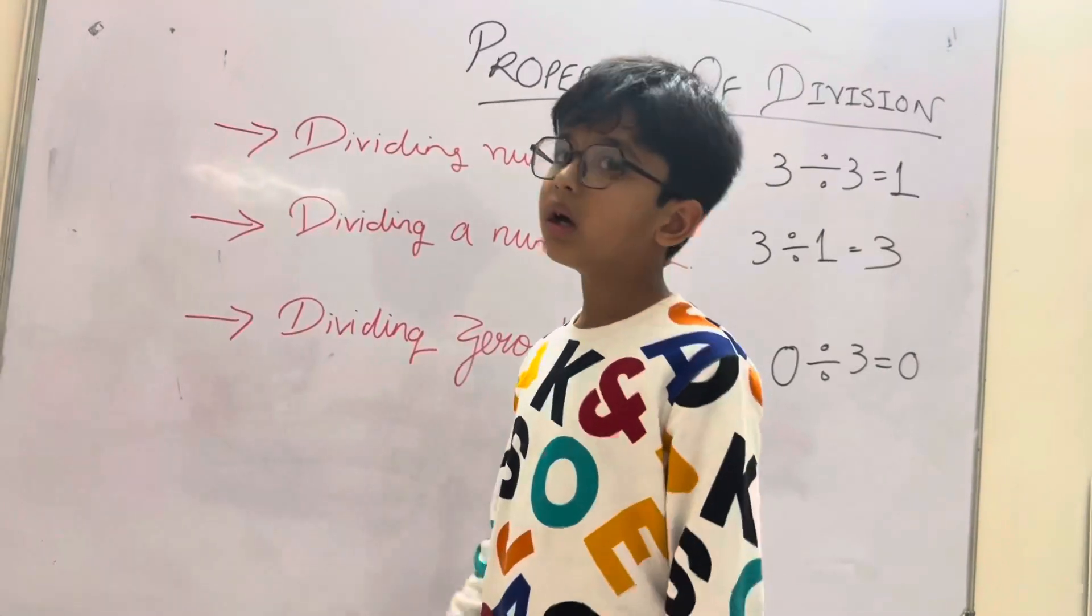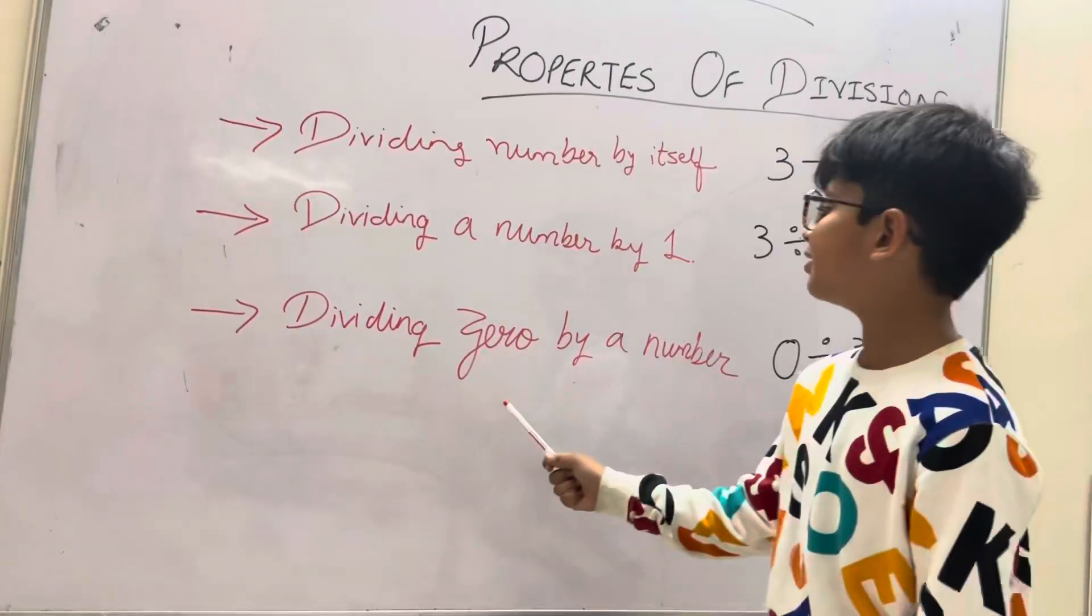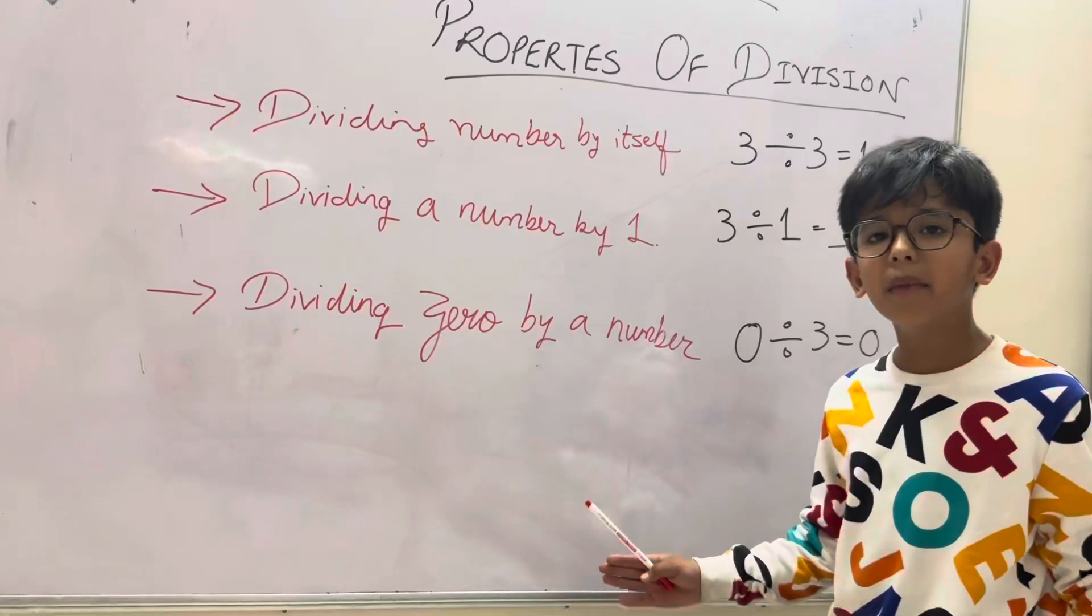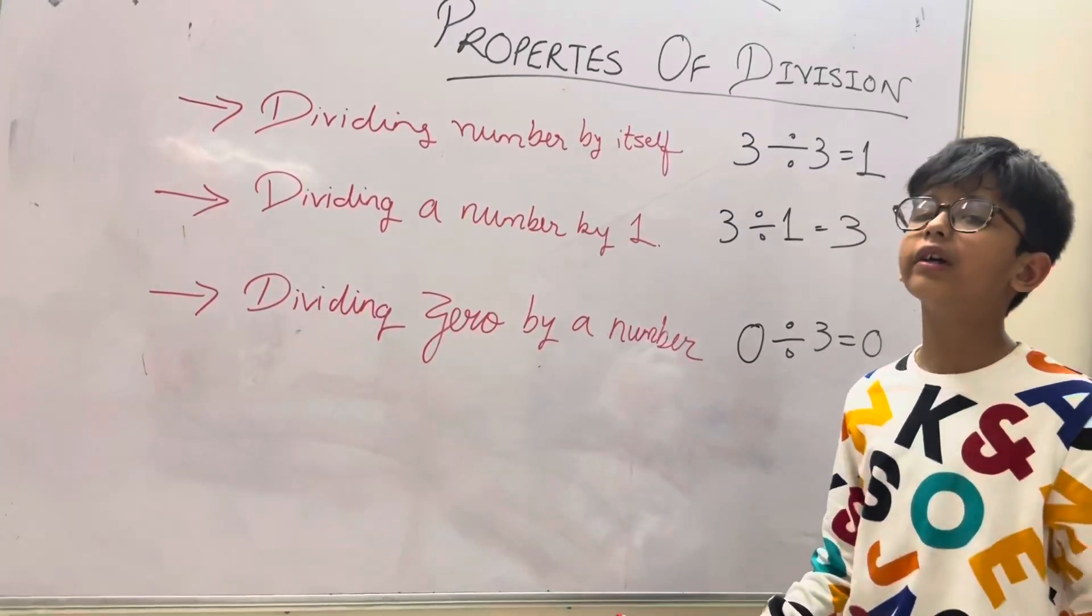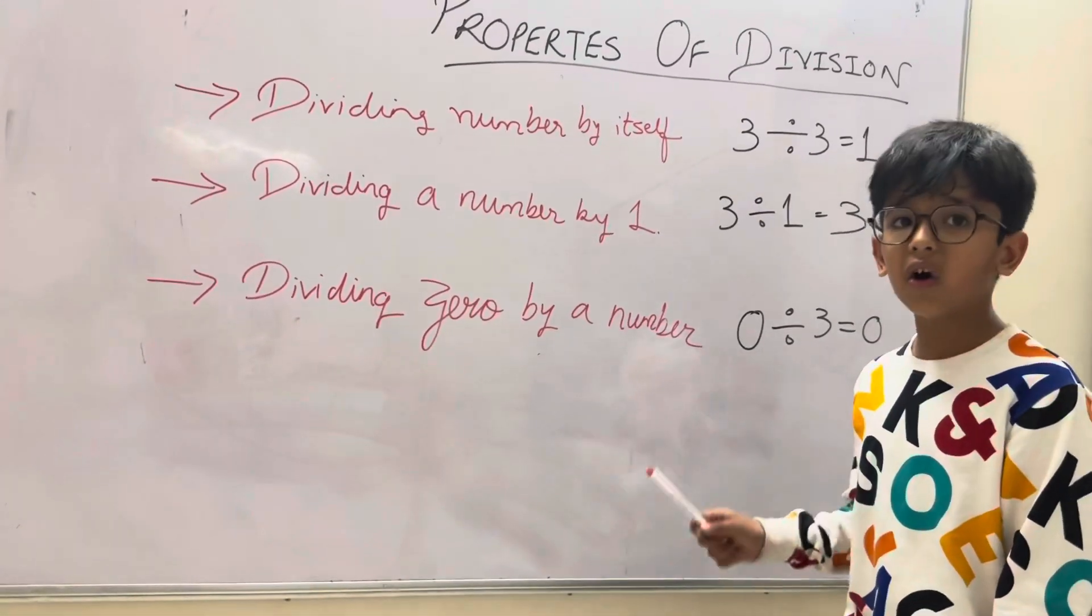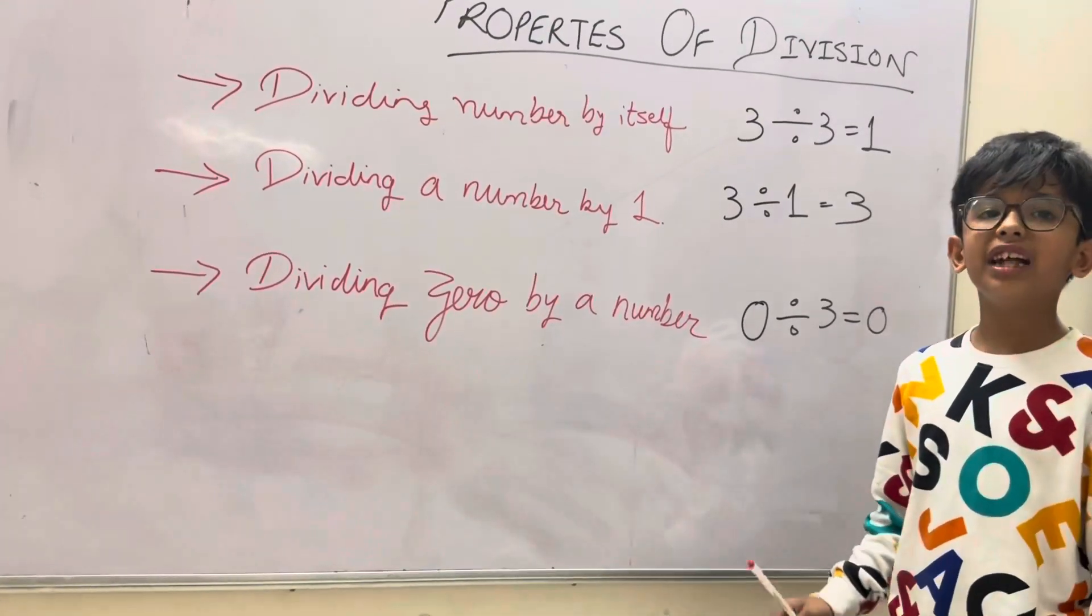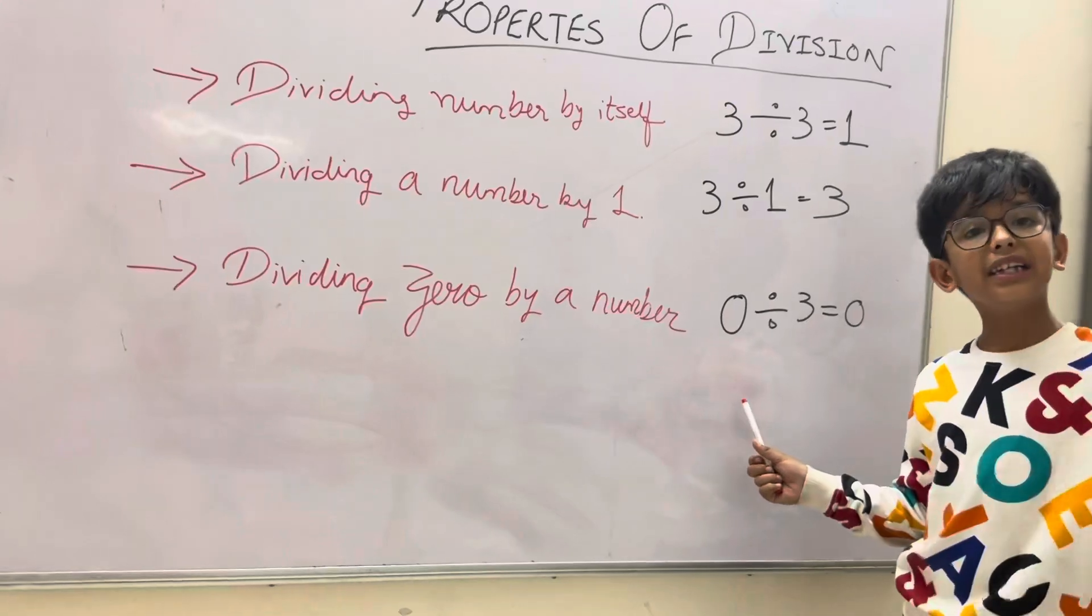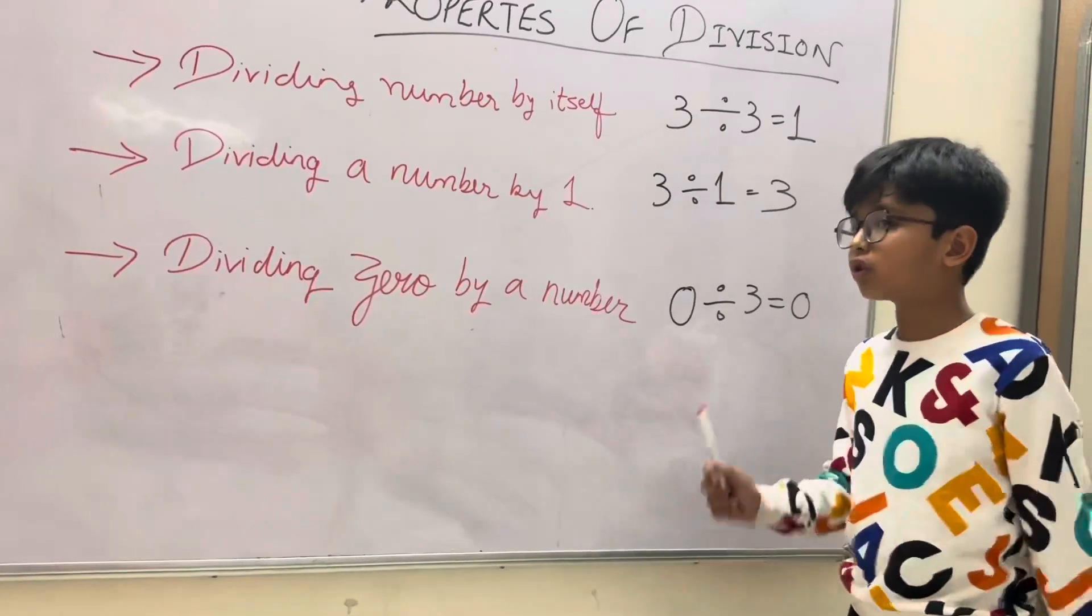Third property is dividing 0 by a number. 0 divided by any number other than 0 gives the quotient as 0. Example: share 0 cakes among 3 persons, so it will get 0 cakes. So we have to write that 0 divided by 3 equals 0.